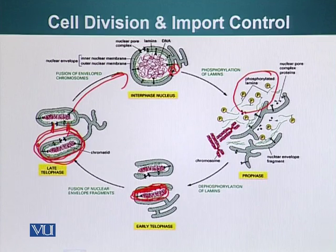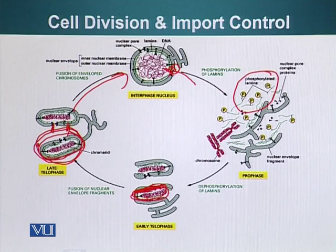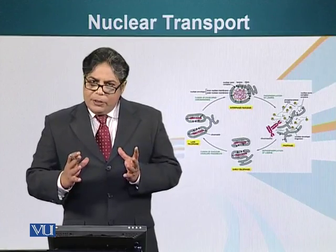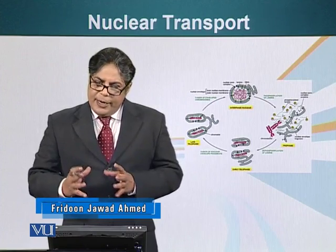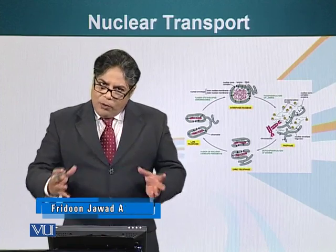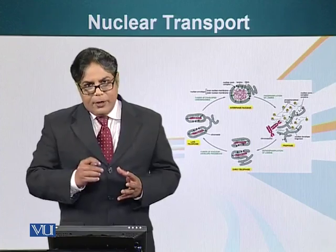Once the nucleus has been formed, only those proteins that are required by the nucleus will be allowed to enter; proteins which are not required will not be allowed to enter. This is how a cell that has gone through cell division keeps random cytoplasmic proteins out of the nucleus. We have seen two beautiful examples of how the NLS signaling is regulated and how proteins are kept out of the nucleus when they are not supposed to be there, and how proteins enter the nucleus when they are required.